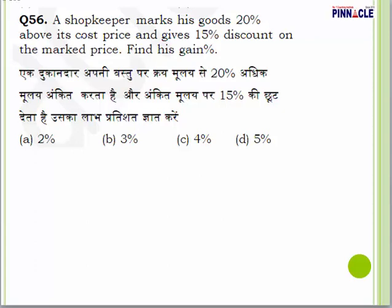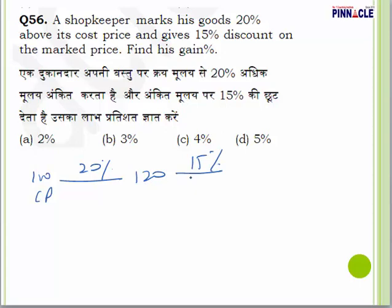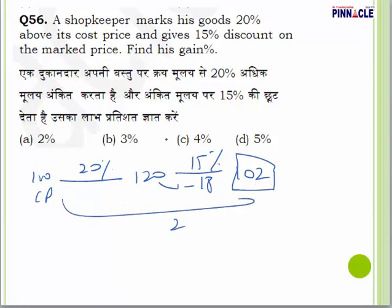Question number 56: A shopkeeper marks goods 20% above cost price. If cost price is 100, marked price is 120. He gives 15% discount, which is 18 rupees, so selling price is 102 rupees. Cost price is 100, selling price is 102, so profit is 2 rupees on 100, meaning 2% profit.